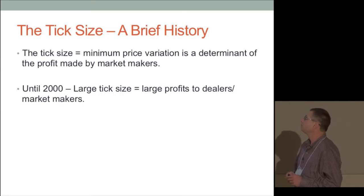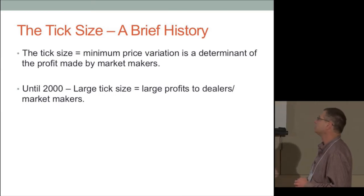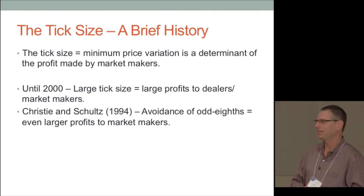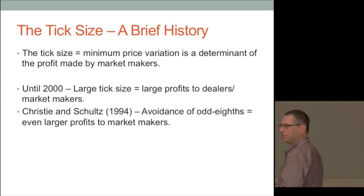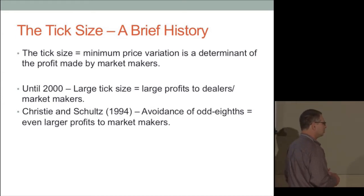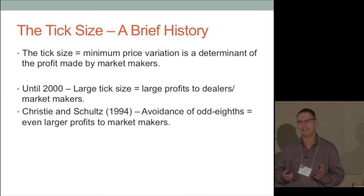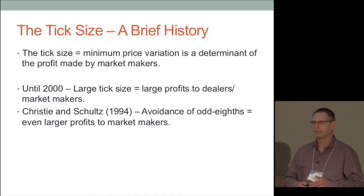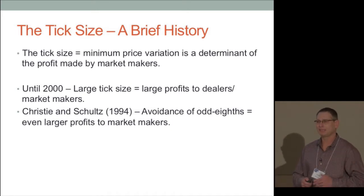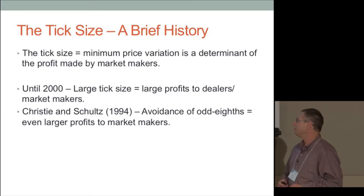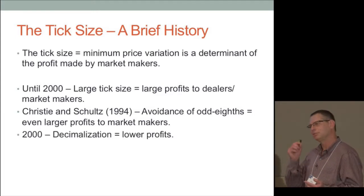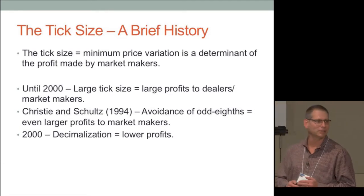Until the year 2000, the tick size was actually pretty large — like 1/8th or 1/16th — so dealers had large profits. In fact in 1994 there was a controversial paper by Christie and Schultz about the fact that Nasdaq dealers did not quote odd eighths, making the effective tick size 1/4. It was a big deal at the time, but since then it became a small deal — it's just one penny, who cares.